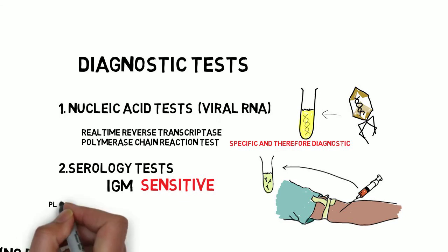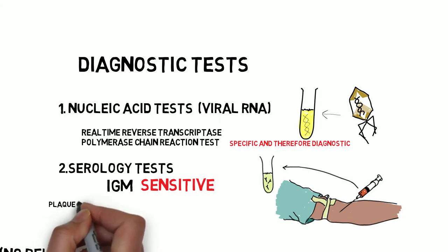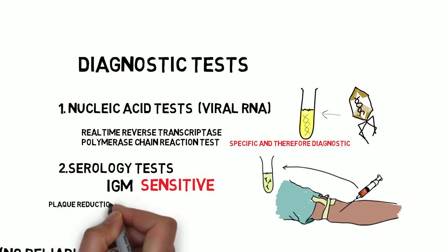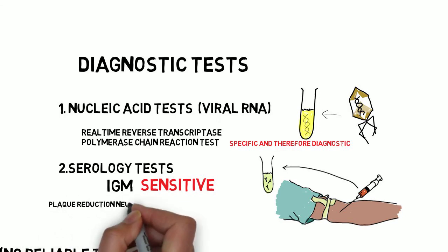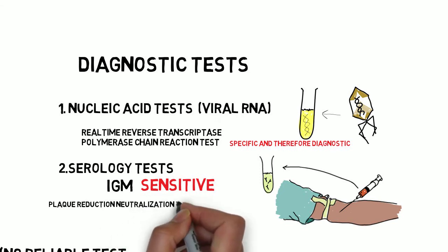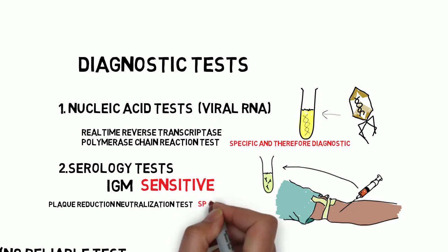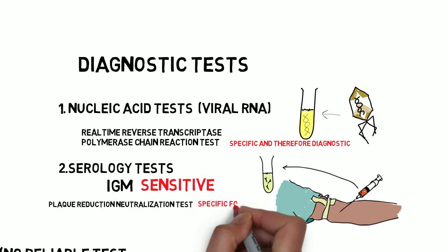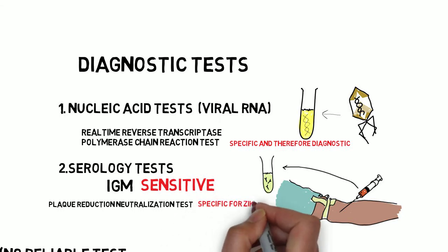That's where the specific antibody test comes in: the plaque reduction neutralization test, or PRNT. If this is the first flavivirus infection for the person, the PRNT will tell you which one it is. If they've already been infected with others, those levels can bump and make the whole thing confusing.